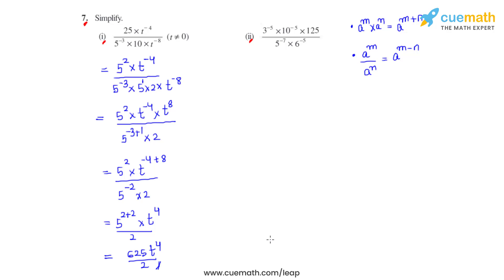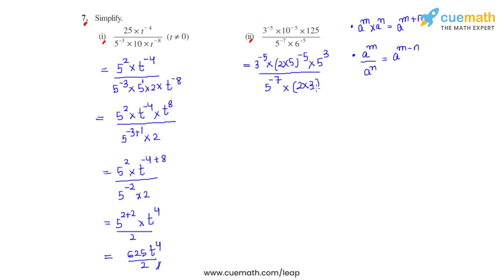Now let's go on to the second bit. In the second bit we have 3 raised to negative 5 times 10 raised to negative 5. Now 10 raised to negative 5 can be written as 2 times 5, whole raised to negative 5, as 10 is a product of 2 and 5. We also have 5 raised to 3 divided by 5 raised to negative 7, times 6 raised to negative 5. Now 6 can be written as a product of 2 and 3, so we write it as 2 times 3, whole raised to negative 5.